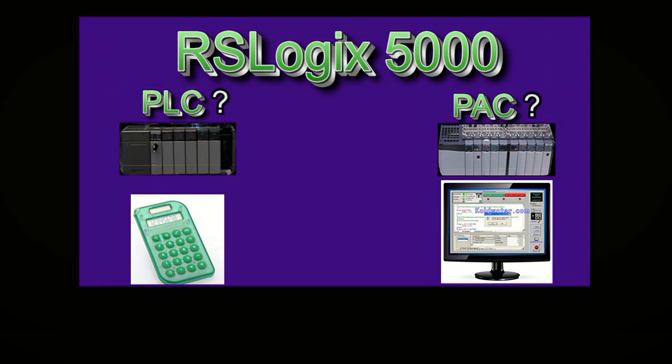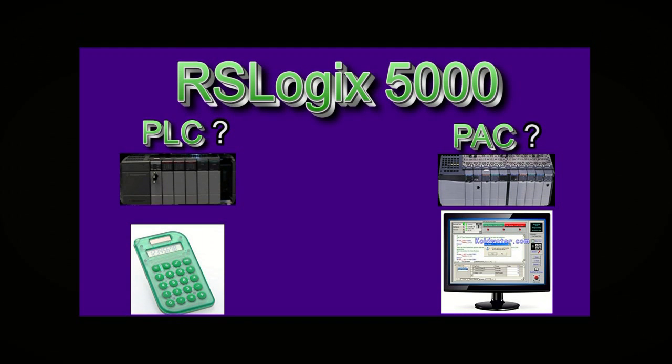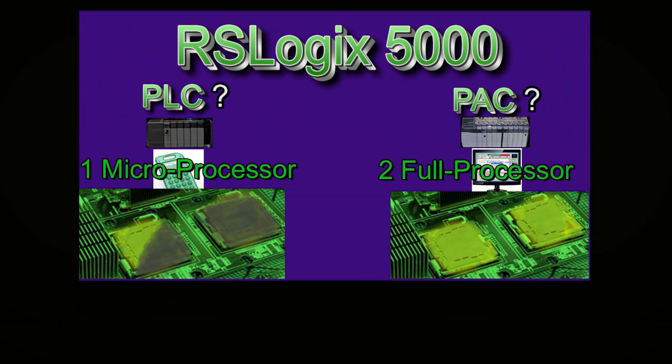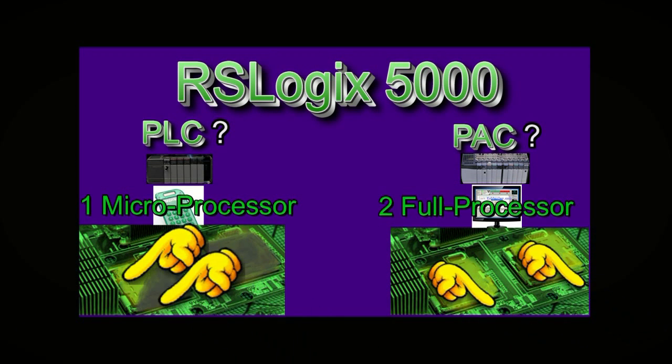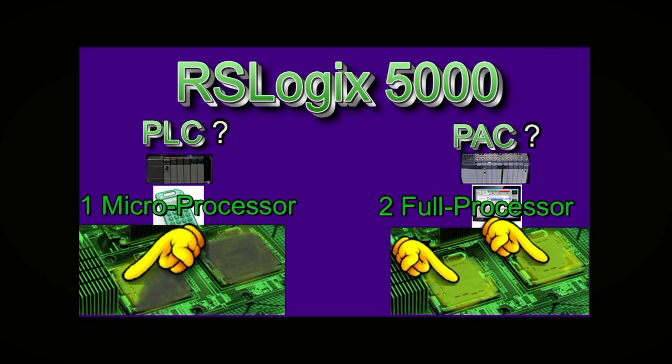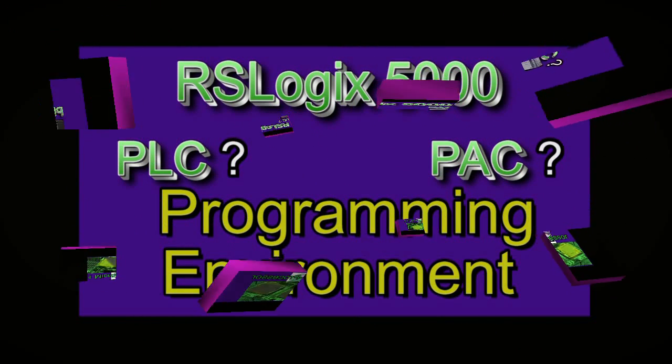A PLC compared to a PAC is like a calculator compared to a computer — literally, as both a calculator and a PLC have a single scan cycle and can run just on a microprocessor, whereas a computer and a PAC require multiple full processors so they can multitask.